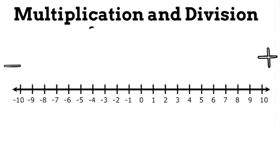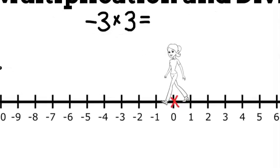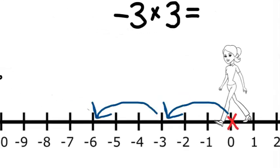Lastly, let's check out multiplication and division. Take negative 3 times 3, for example. On the number line, we need to start at zero, and we need to move negative 3 three times. We end up at negative 9.